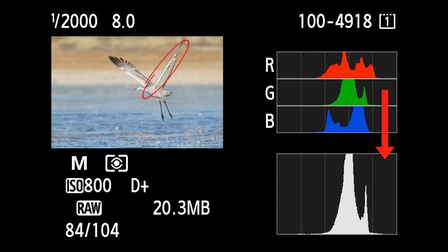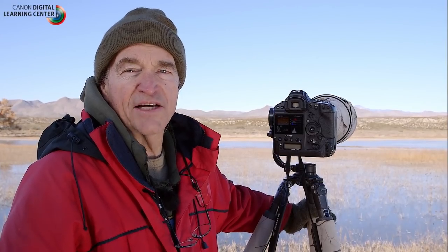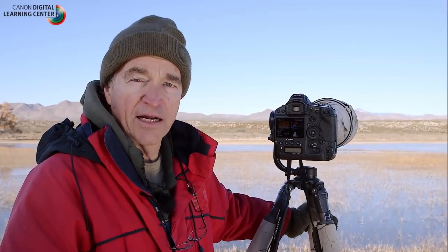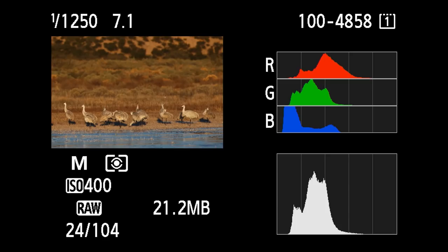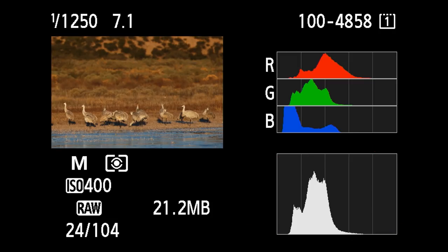Here you can see the brightest highlights creeping into that fifth box. What you want to avoid is having blinkies on the subject. Here are two pictures that offer a great example of creating a test exposure: seeing that you're too dark, then making an adjustment to move that histogram to the right. In the first image the histogram is well to the left of center — we're underexposed — so I knew I needed to make the exposure lighter.